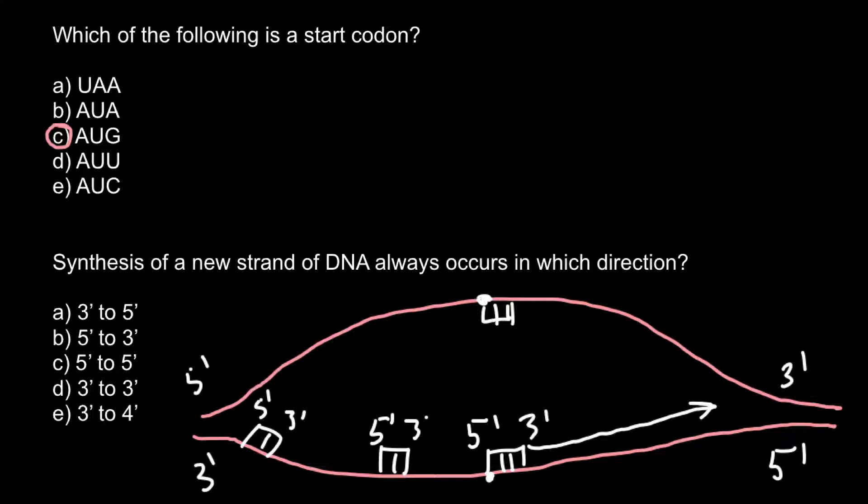And once again, new strand of the DNA would be synthesized from five to three prime direction. So would go in this direction and in this direction.